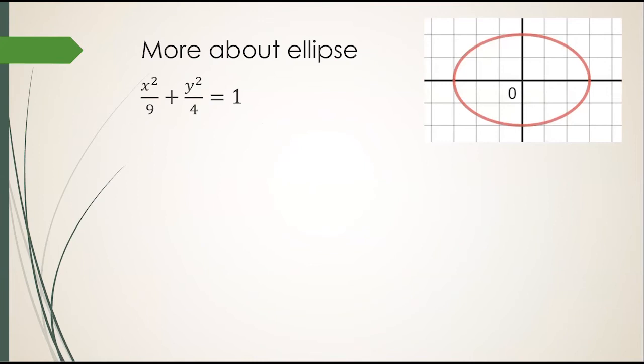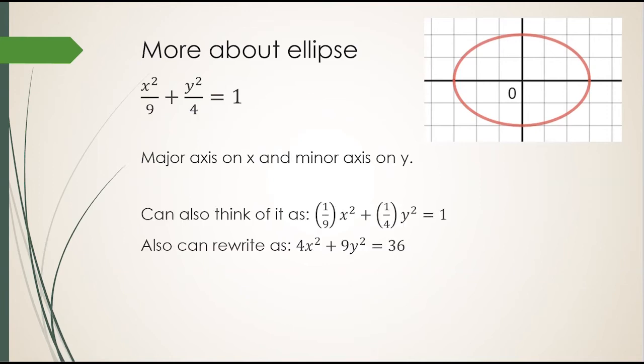Let's take this ellipse. It has a major axis on x and a minor axis on y. In standard form, we can figure this out because the denominator of x is larger than the denominator of y. But how would we figure this out when in non-standard form? You can think of the equation as 1 ninth as a coefficient times x squared plus 1 fourth times y squared equals 1. Or you can also rewrite it after multiplying both sides by 36 as 4x squared plus 9y squared equals 36.